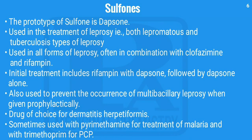The prototype sulfone is dapsone, used in the treatment of lepromatous and tuberculoid types of leprosy, and in all forms of leprosy, often in combination with clofazimine and rifampin. Initial treatment includes rifampin with dapsone, followed by dapsone alone. Given prophylactically it prevents multi-bacillary leprosy. It is also the drug of choice for dermatitis herpetiformis, and is used with pyrimethamine for malaria and with trimethoprim for PCP.